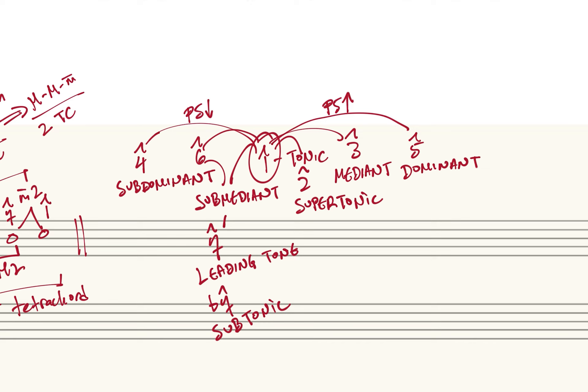A quick review of scale degree names, all understood relative to the tonic: dominant is five above, subdominant is five below. Quick caveat — subdominant doesn't mean 'just below the dominant'; it means five below the tonic. Mediant is three above, submediant is three below. Supertonic is two above — a step above the tonic. And scale degree seven is the leading tone if it's a minor second below, or the subtonic if it's a major second below the tonic.